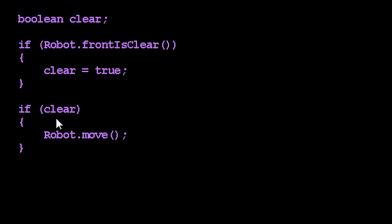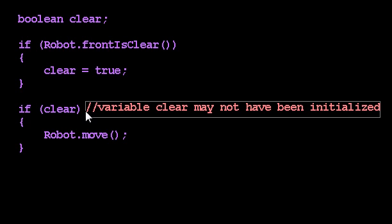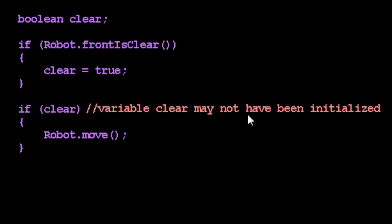But there is still a problem. If the front is clear, then clear is true, and so this will say if true, move, and the robot will move. But what if the front is not clear? Then clear doesn't get assigned — we never initialized clear. So Java's going to give us an error: variable clear may not have been initialized. It might have been initialized if the front was clear, but if we never got to that assignment statement, then clear is never given a value, and we can't use it.